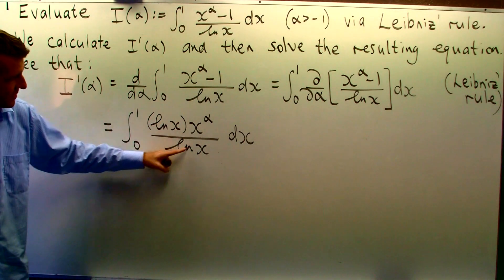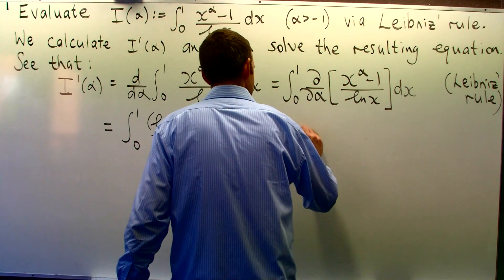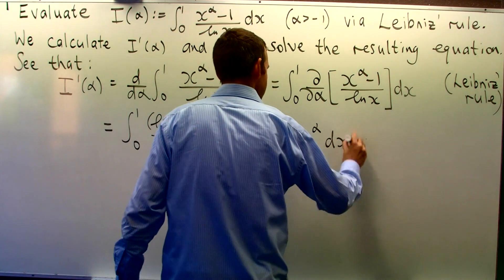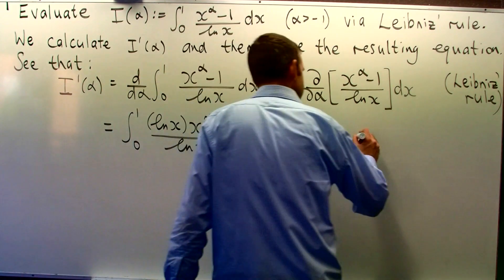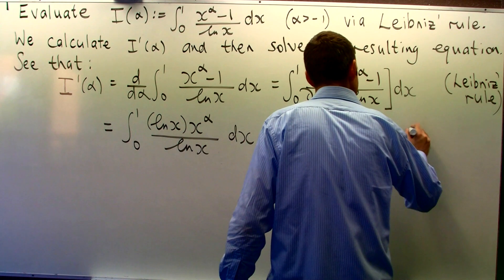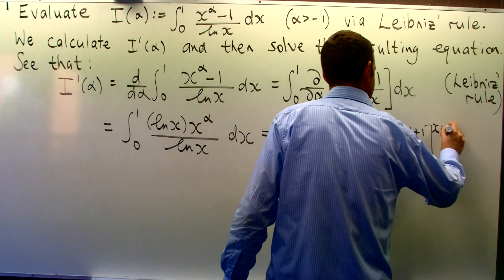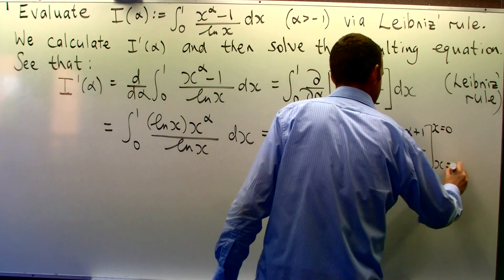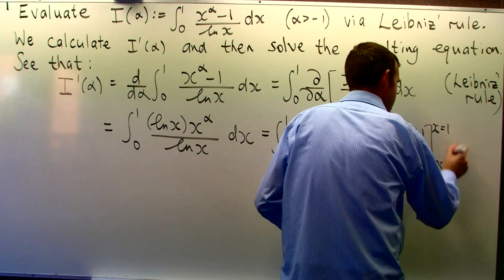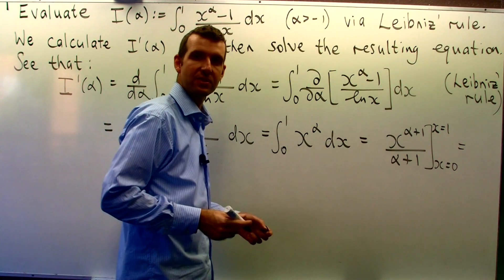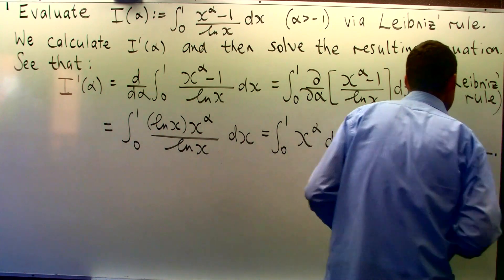So now you can cancel off the log x's and you're left with this simple expression. Now because alpha is greater than negative 1, I'll get something like the following. And then substitution. Substitution in here for x equals 1 and 0 just gives you 1 on alpha plus 1.